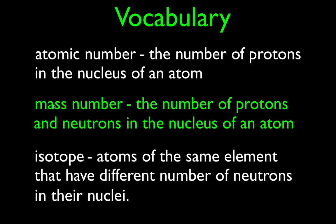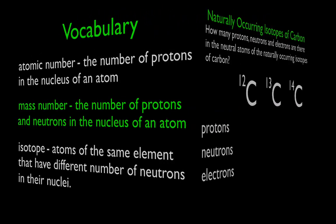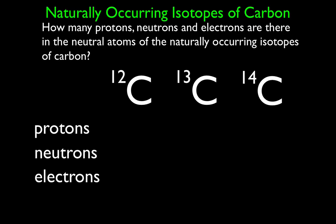So those are the terms you should know. Let's keep those in mind and try to answer these questions. This first question is about the isotopes of carbon. It's not something you get off the periodic table or memorize — you look up on a table the naturally occurring isotopes of the elements. You look up carbon, and you'll see there are three isotopes of carbon. We want to know how many protons, neutrons, and electrons are there in the neutral atoms of these naturally occurring isotopes. The symbol for carbon is C, and the three isotopes are carbon-12, carbon-13, and carbon-14.